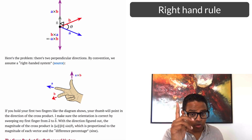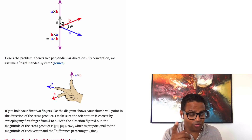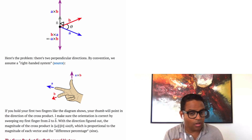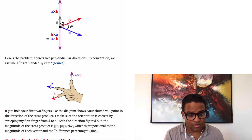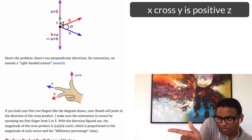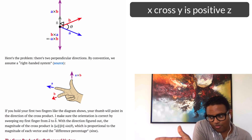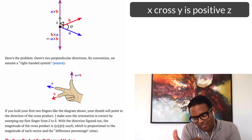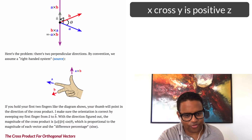We can do a quick test: (1, 0, 0), which is 1 in the X direction, cross (0, 1, 0), which is 1 in the Y direction, would be positive Z. So X cross Y is positive Z — the X-axis cross the Y-axis gives the Z-axis pointing up. That's the right-handed system.